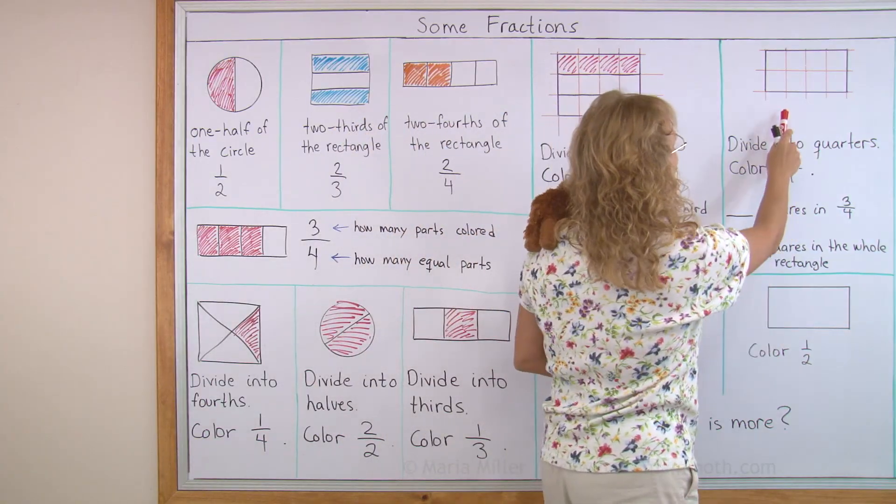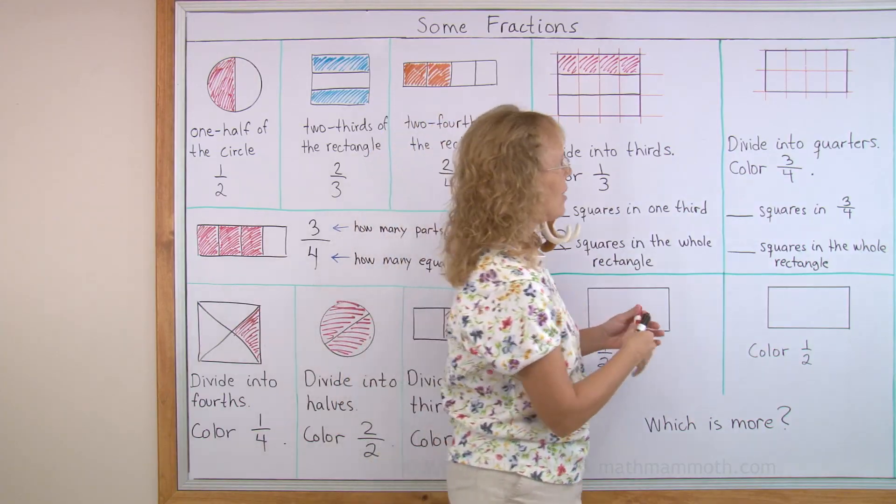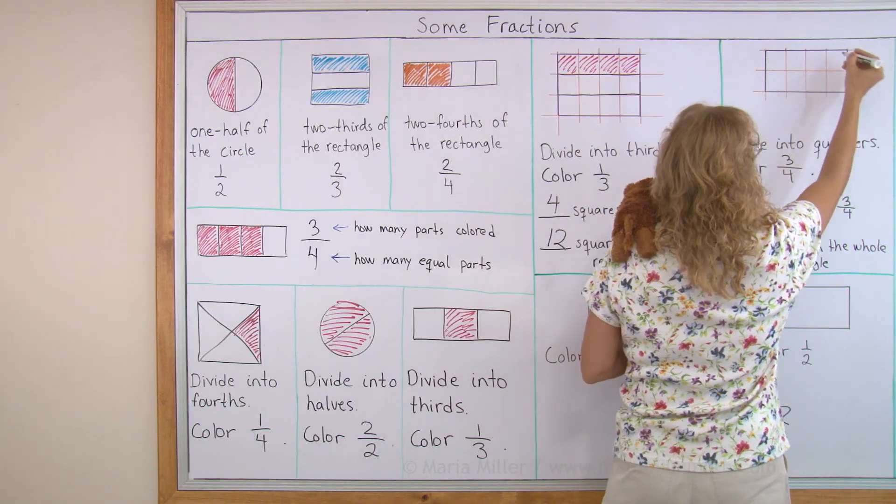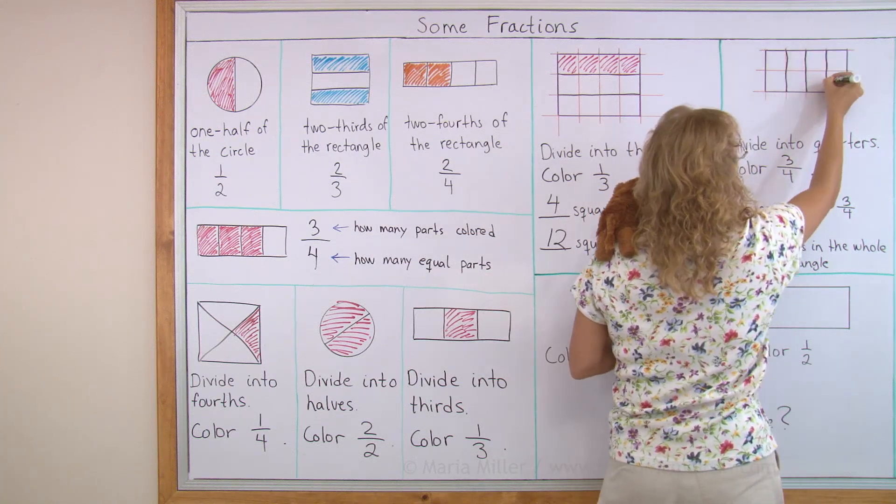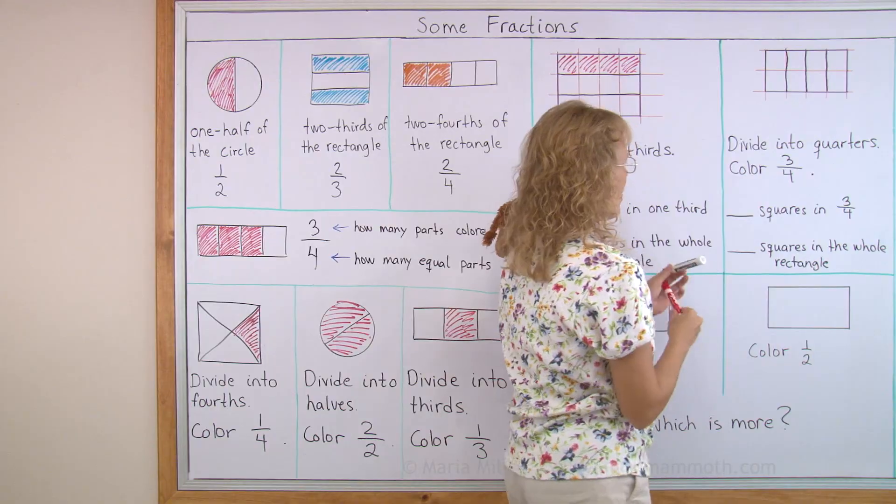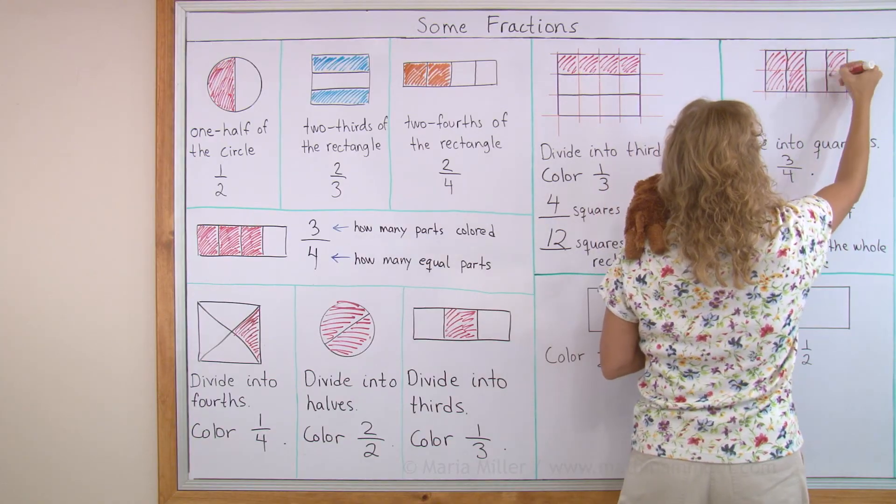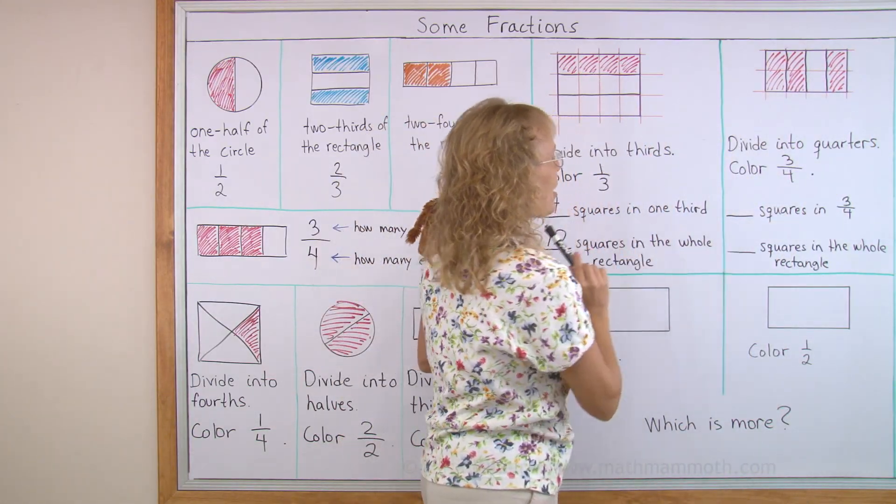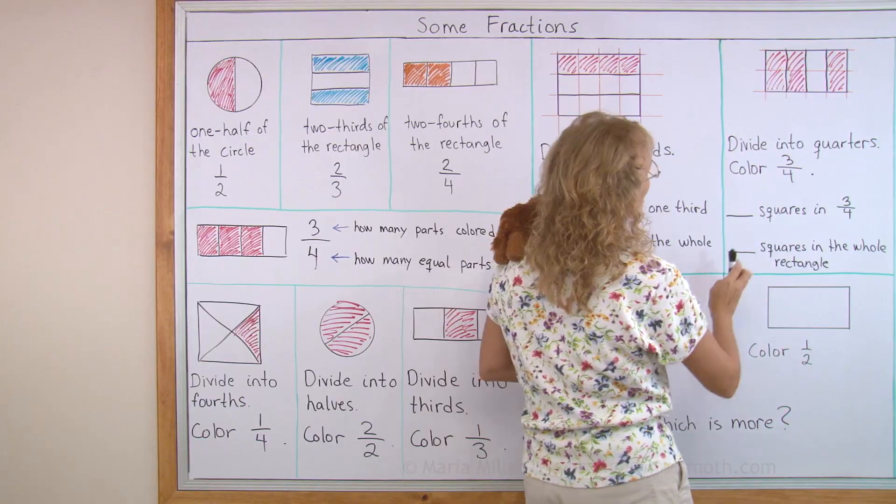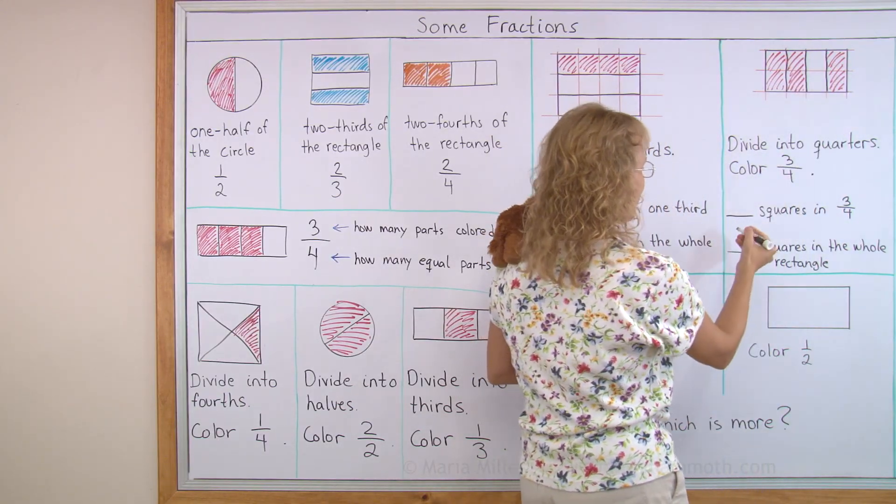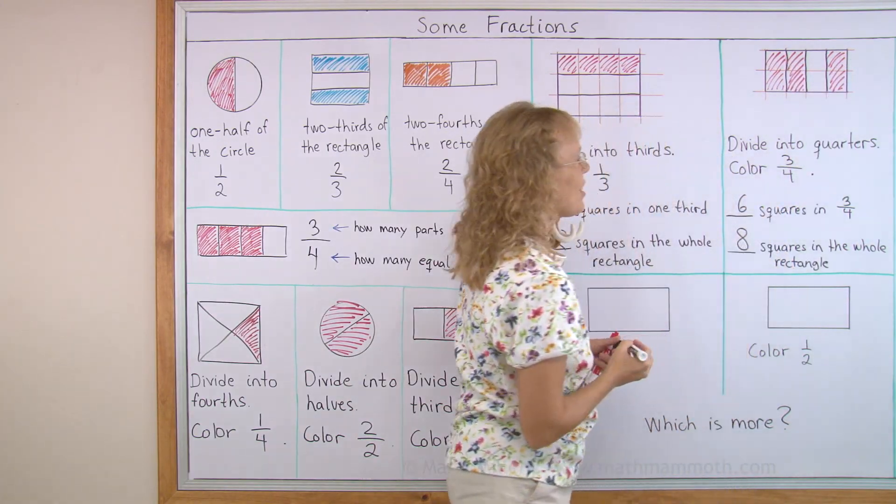Let's do the same over here. Divide this into quarters. Quarters is the same as fourths. So four parts. I need to divide this into four parts. Now it's divided into four parts. Color three fourths. How many little squares are in those three fourths? And how many little squares are in the whole rectangle? There's one, two, three, four, five, six, seven, eight squares in the whole rectangle. And then one, two, three, four, five, six squares in three fourths of it.